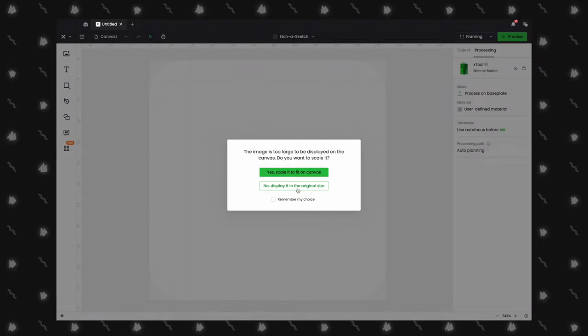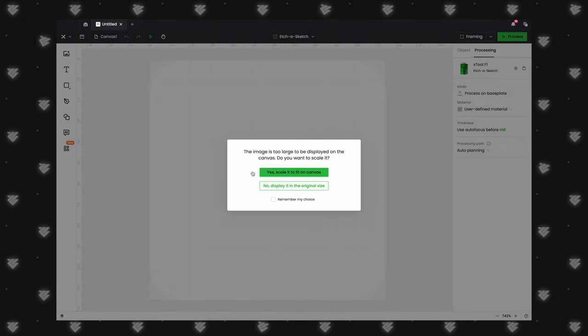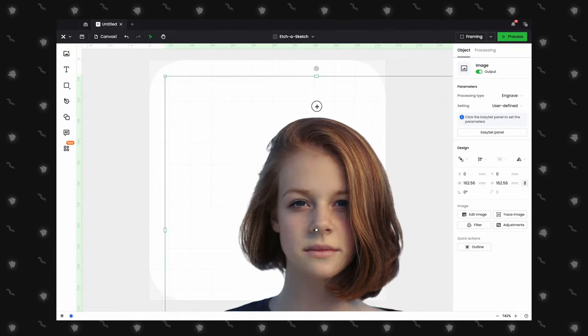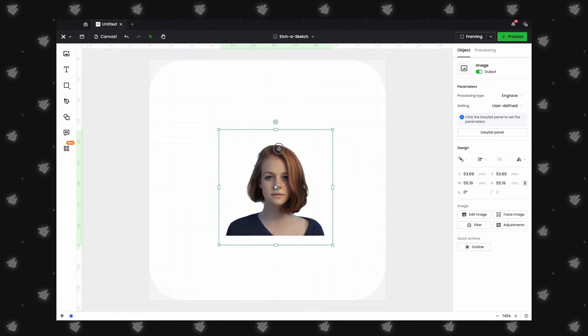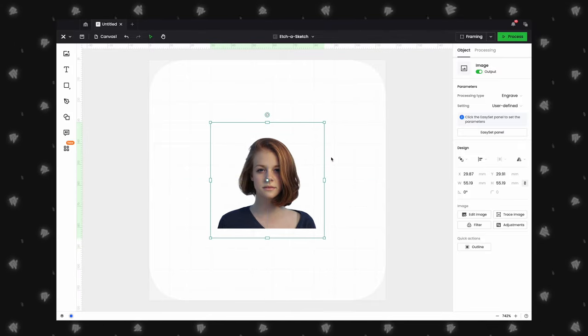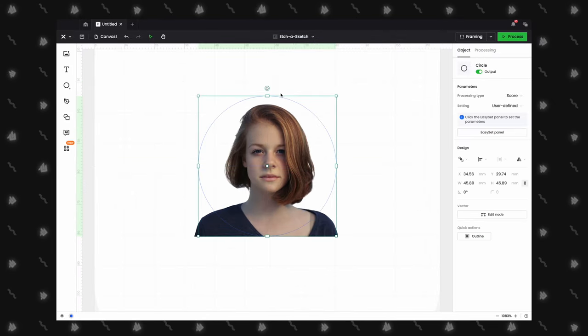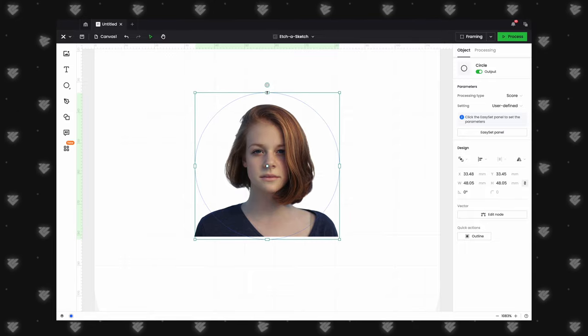For this example, we will be engraving an 18-karat gold-plated pendant. So we will resize the image to fit our work area. Next we will add a circle. We will use this circle to mask the image so it fits perfectly on our piece.